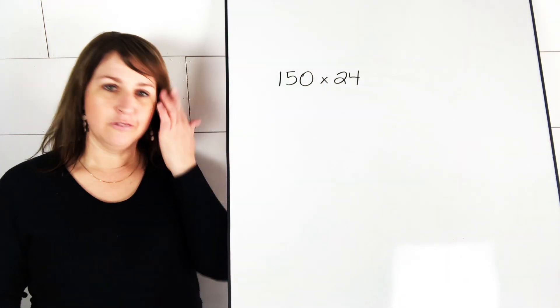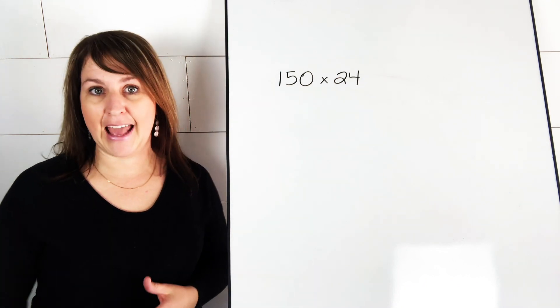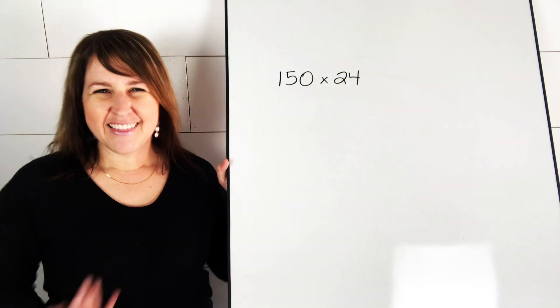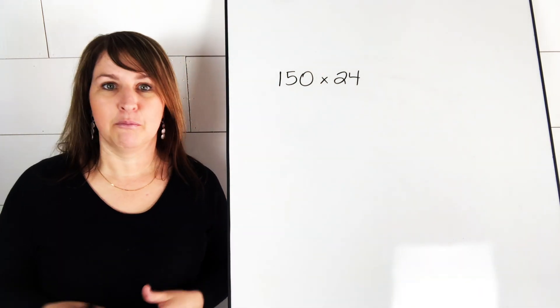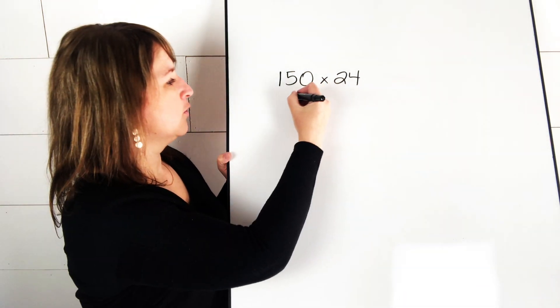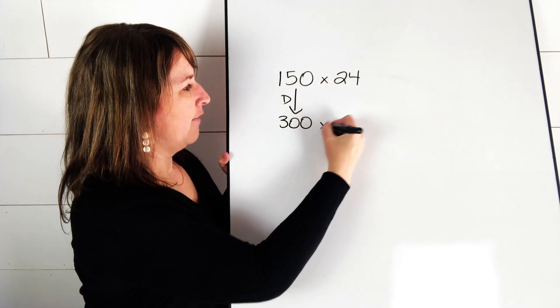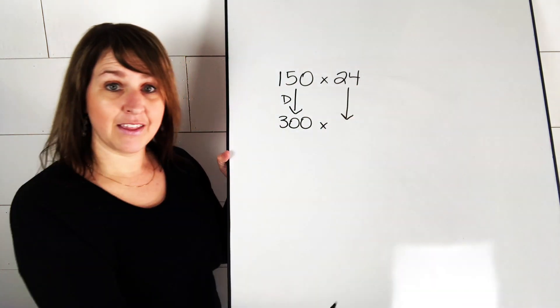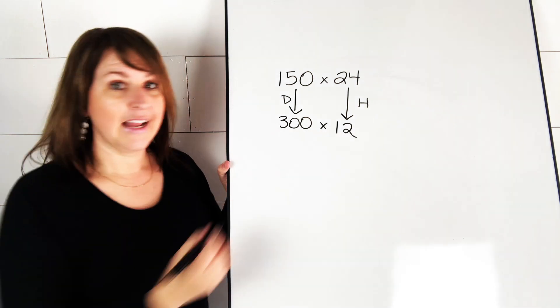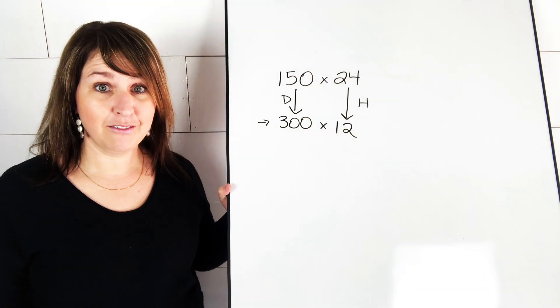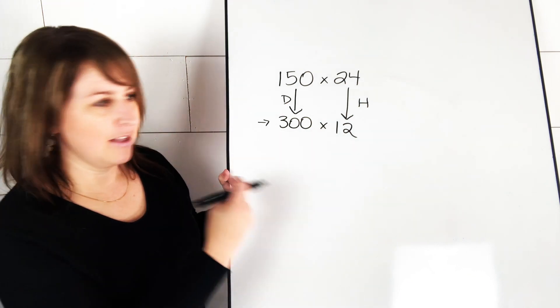So we have to choose, first of all, which side we're going to double and which side we're going to divide in half. So I think we should probably double the 150 because that gives us 300, which is a friendly number, right? It's easy to work with. So let's double this side to make 300. And then that means we have to split the other side in half. So we'll half this one to make 12. Now is this easier to solve? 300 times 12? It is. But if it's not easy enough yet, we could keep going.